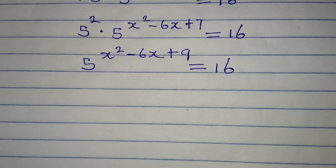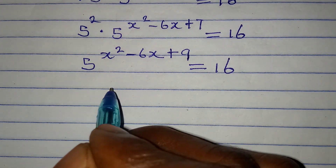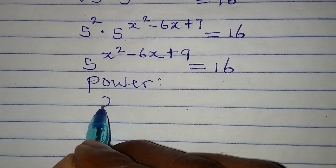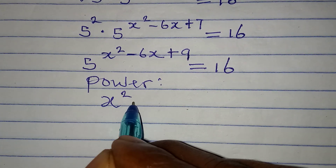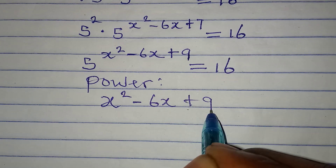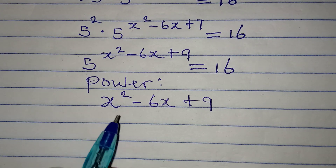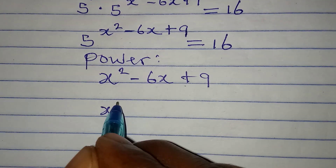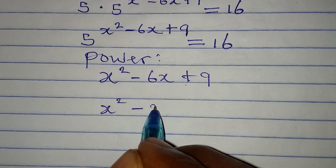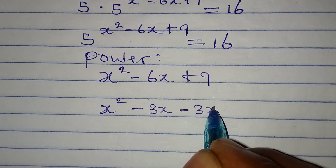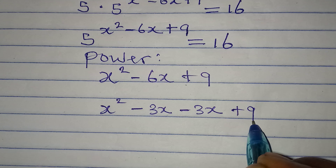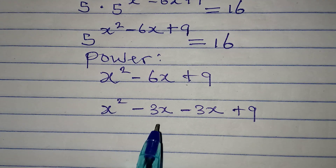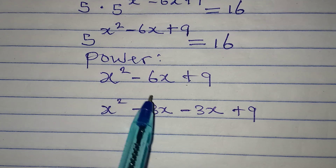From here, there is a quadratic expression as the power of 5. I need to factorize it. Let me deal with the power first: we have x squared minus 6x plus 9. I'll rewrite this as x squared minus 3x minus 3x plus 9, because minus 3 times minus 3 gives us plus 9, and minus 3 minus 3 gives us minus 6.